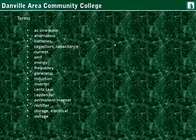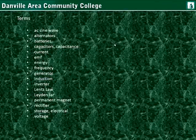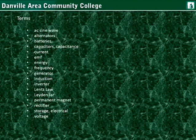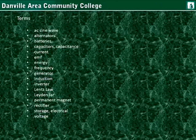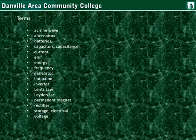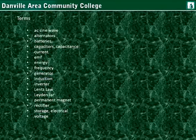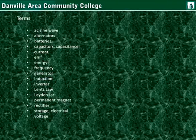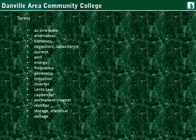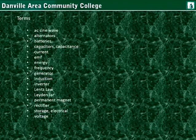It's important to understand the difference between alternating current sources and DC sources. DC would come from a DC generator, a battery, or a solar cell. An AC generator is called an alternator — it's an alternating current generator. Batteries require maintenance. Key terms include: capacitors and capacitance, current, EMF, energy, frequency, generator, induction, inverter, Lenz's law, the Leiden jar, permanent magnets, rectifier, storage, and voltage.